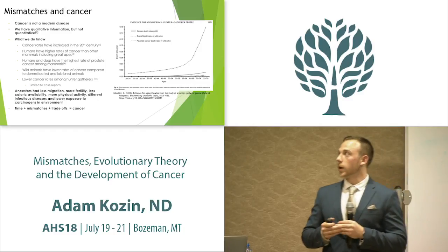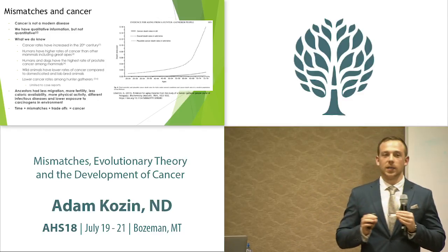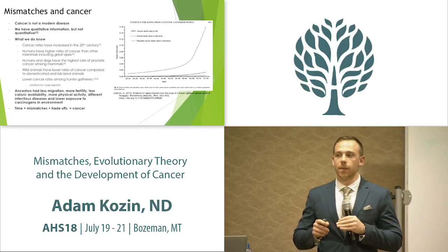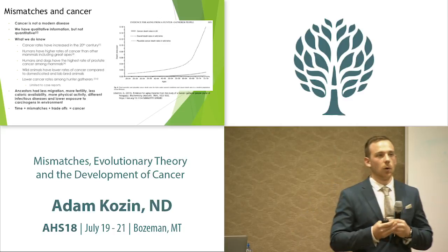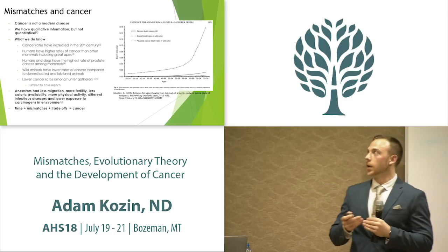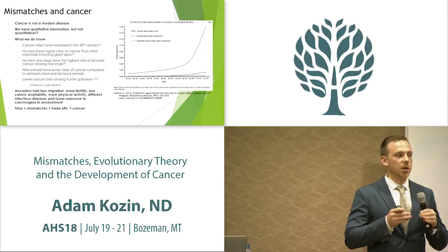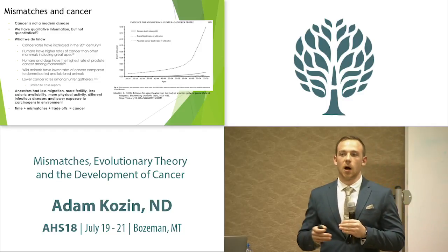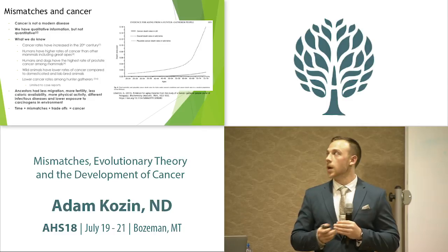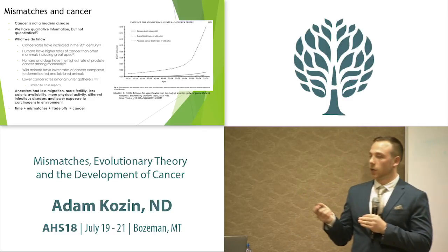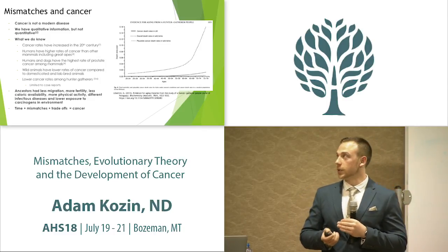The problem when looking at mismatches is that we have qualitative, not quantitative information. We know that things like immunosuppression or inflammation can cause cancer, but we don't know the dose and duration needed to cause carcinogenesis or progression. So we have to turn to evolutionary theory and look at our ancestors to make some assumptions.